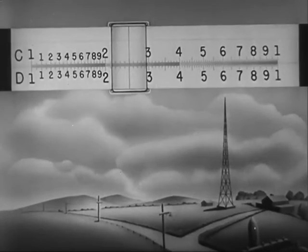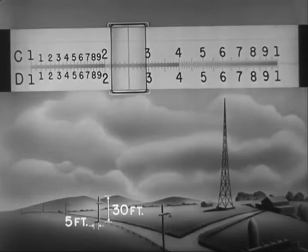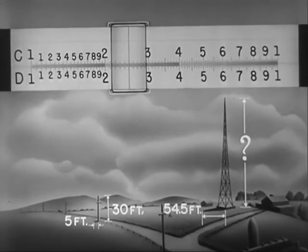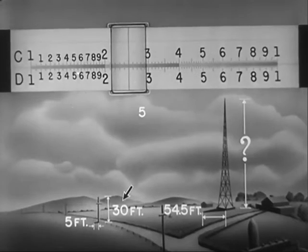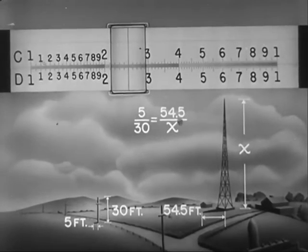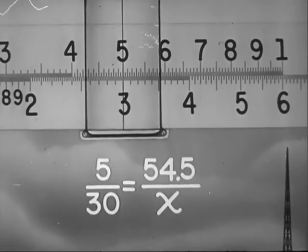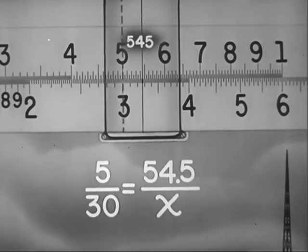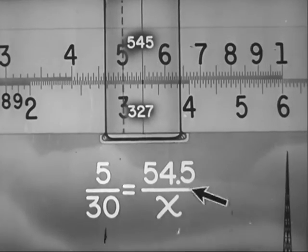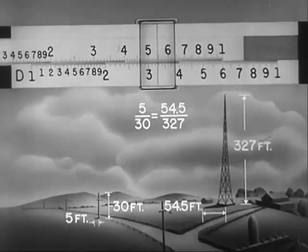Now, to take a typical problem in proportion: here is a post 30 feet high, casting a shadow 5 feet long. The tower casts a shadow 54.5 feet long. How high is the tower? The problem may be stated in terms of proportion: 5 is to 30, as 54.5 is to X. To 3 on D, slide 5 on C. Push the hairline to 545 on C. Under the hairline, read the answer 327 on D. The height of the tower is 327 feet.